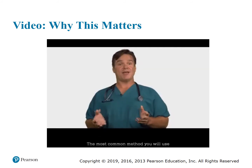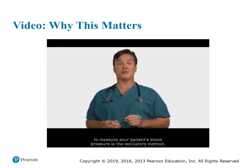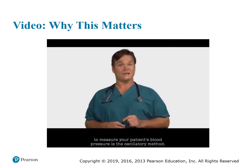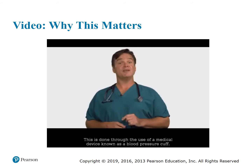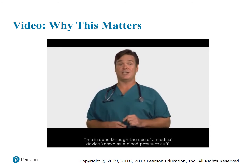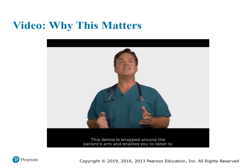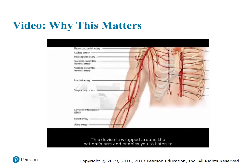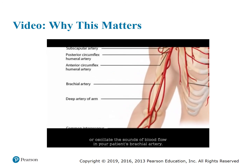The most common method you will use to measure your patient's blood pressure is the auscultatory method. This is done through the use of a medical device known as a blood pressure cuff. This device is wrapped around the patient's arm and enables you to listen to, or auscultate, the sound of blood flow in your patient's brachial artery.